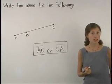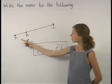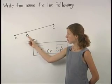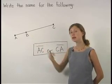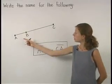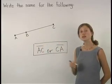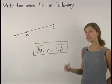It's important to understand that we can't name the segment as segment AB or segment BA or segment BC or segment CB because these segments only represent a part of the entire segment. So the segment shown here is segment AC or segment CA.